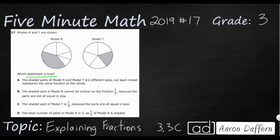Let's look at each of these statements and we'll learn a little bit more about fractions while we do so. A says the shaded parts, this part right here and then this part right here, of model R and T are different sizes. That is correct.